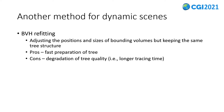Another approach for dynamic scenes is refitting, which adjusts the positions and sizes of bounding volumes in response to object moves. This method always keeps the same tree structure, so sometimes the structure is very far from the ideal one. As a result, degradation of tree quality is observed, which leads to longer tracing time. There are some methods for recovering tree quality occasionally, but the stability of performance is sacrificed.